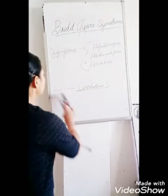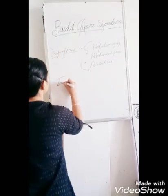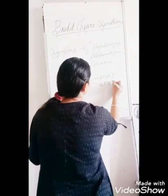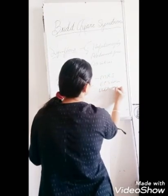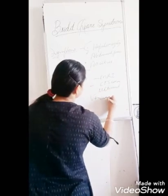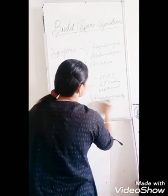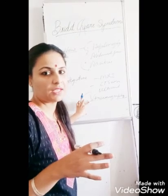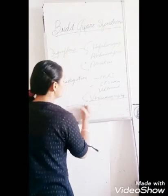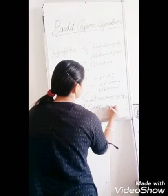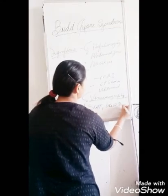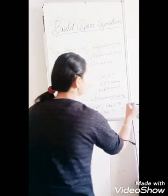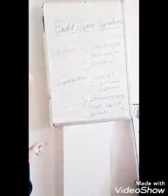In investigations, we go for MRI, CT scan, Doppler ultrasound, and venacavography. With venacavography, the web present in the suprahepatic portion of the inferior vena cava can be easily seen. Then liver function tests — SGPT and SGOT are elevated, bilirubin is elevated causing jaundice, and prothrombin time is also elevated.